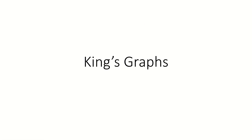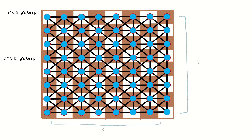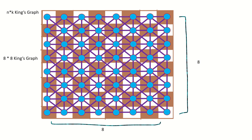Hello VitalSign! Today we're going to talk about king's graphs. An n×k king's graph is a type of graph whose vertices represent squares on an n×k chessboard and whose edges represent all possible legal moves of a king on a chessboard.